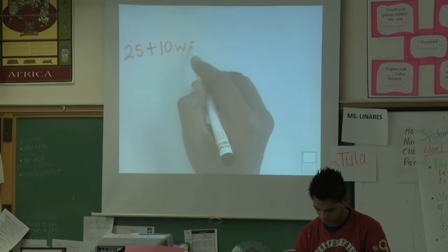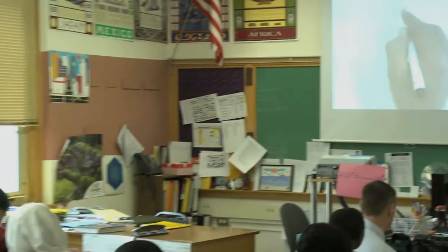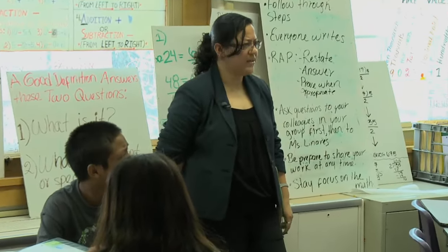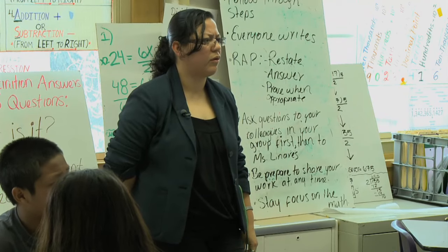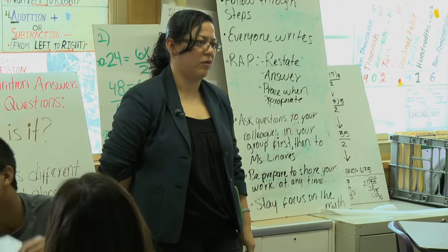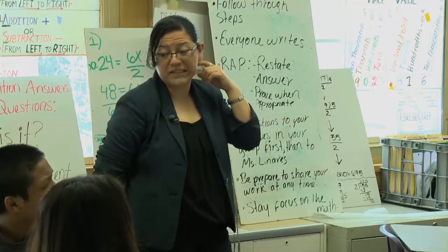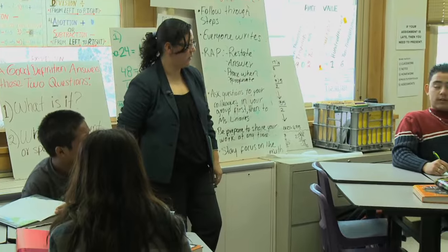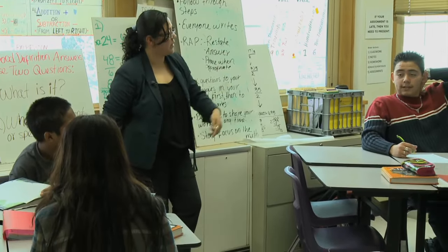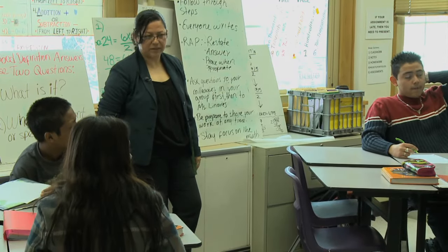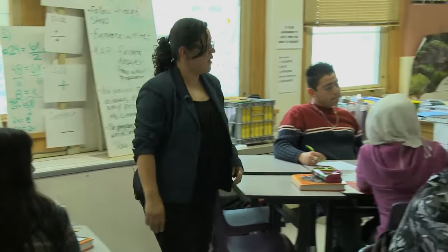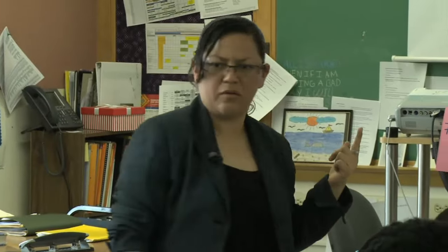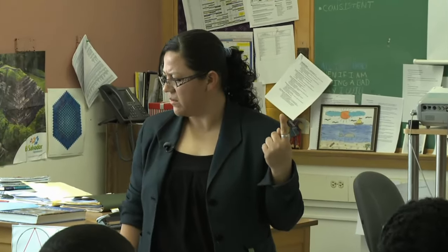Look at that equation — increasing or decreasing? Increasing. How do you know? Because there's a plus sign and it's 25 and they're adding ten every week. The slope — positive or negative? Positive. If the slope is negative, what do we know? It's going to be decreasing. Do we have any questions?